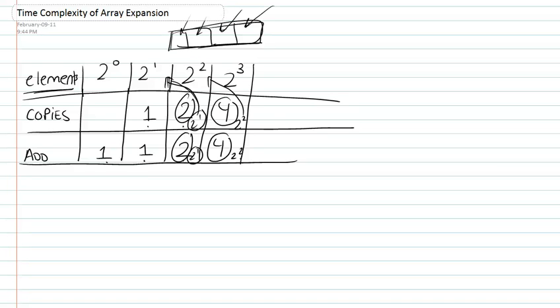So let's pick up from where we left off in the previous video. We said that we find there is a pattern that emerges in the number of copies and additions that we need to perform in order to fill out our expanded array.